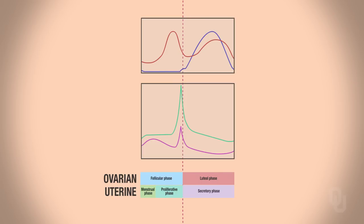What I'm going to do first is give you an overview of what these hormones are. It's showing you what the hormone levels are during the follicular phase, which is part of your ovarian cycle, and also the menstrual and proliferative phases, which are part of the uterine cycle. And then on the other side of the dotted line in this diagram, it's showing you hormone levels during the luteal phase and the secretory phase.